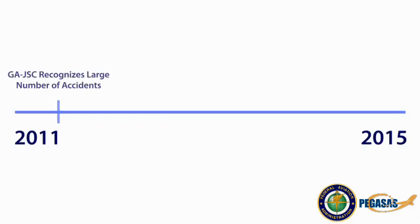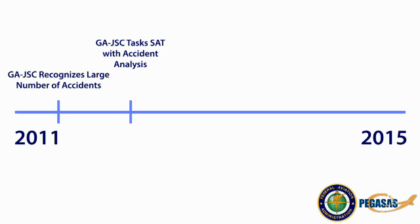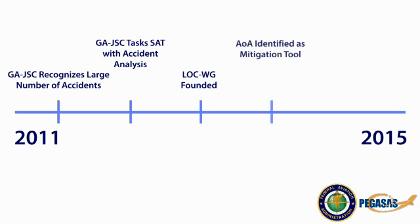In 2011, the General Aviation Joint Steering Committee, or GAJSC, recognized the need to address loss of control accidents and started researching ways to mitigate these events. They tasked the Safety Analysis Team with the analysis of accidents caused by loss of control. Following the Safety Analysis Team's findings, the Loss of Control Working Group was founded to research and make recommendations for potential solutions. The Loss of Control Working Group determined that angle of attack displays could be a useful mitigation strategy for general aviation aircraft.